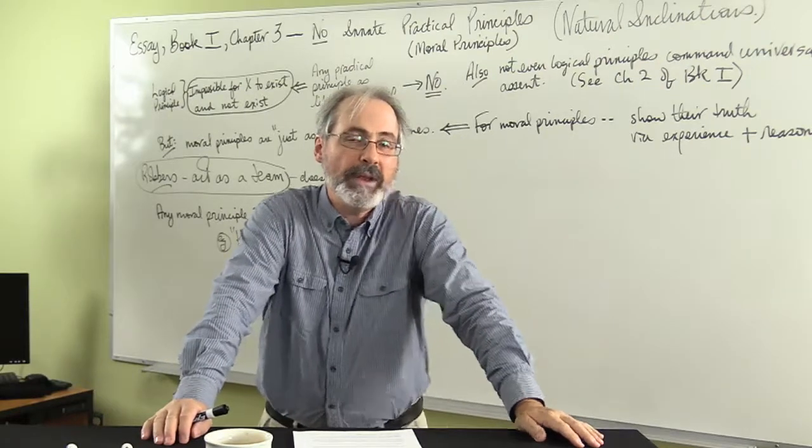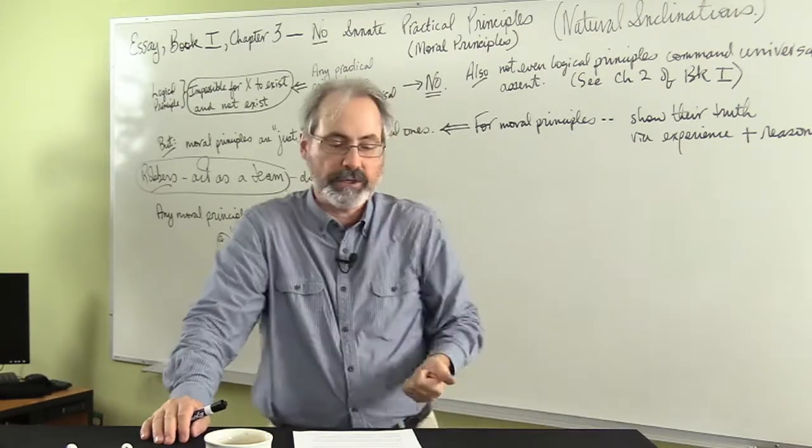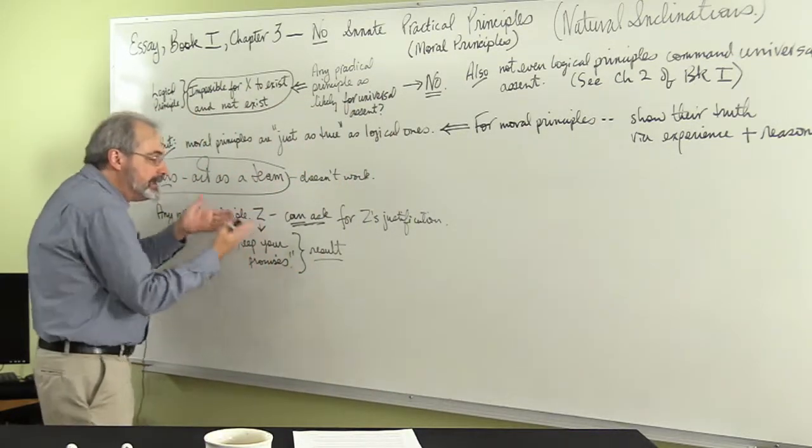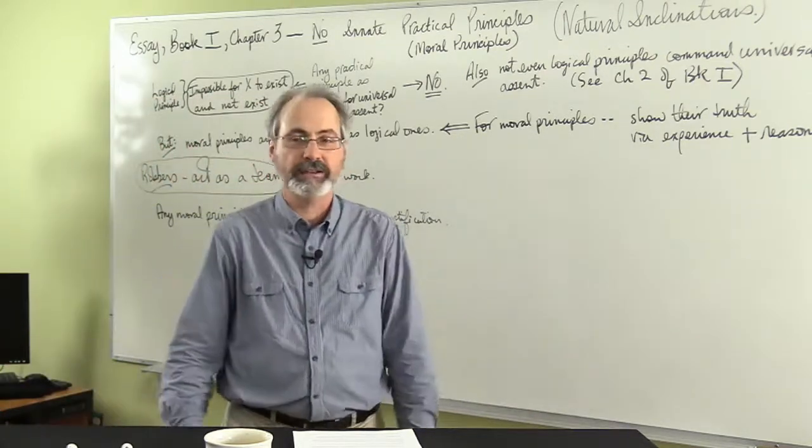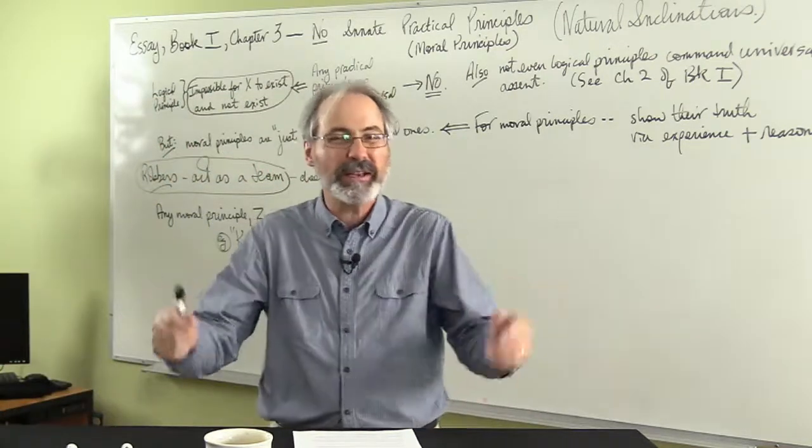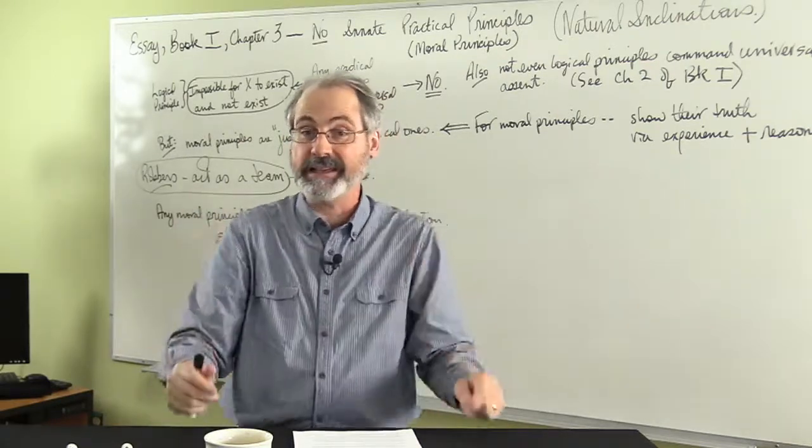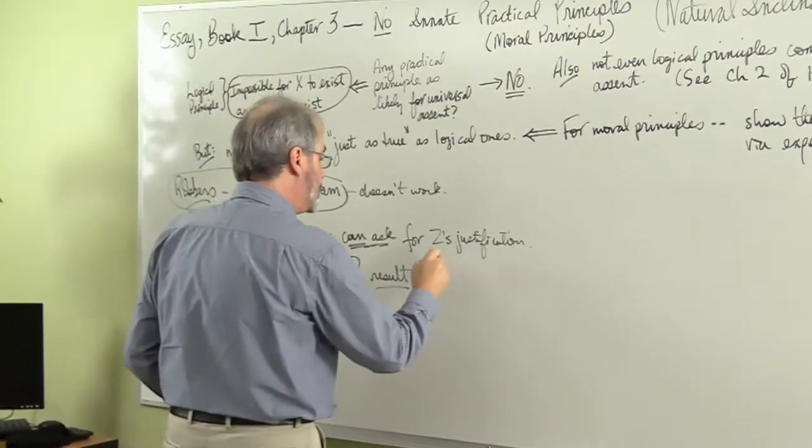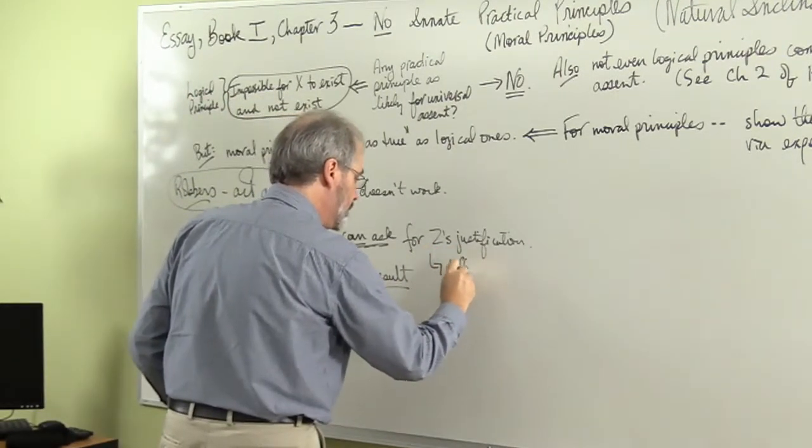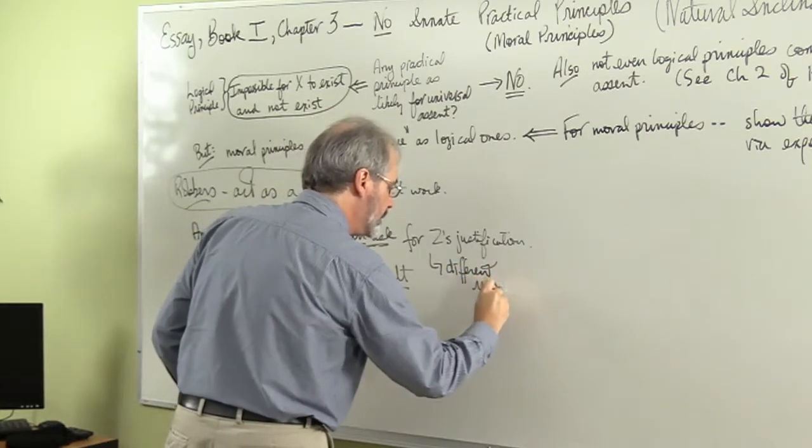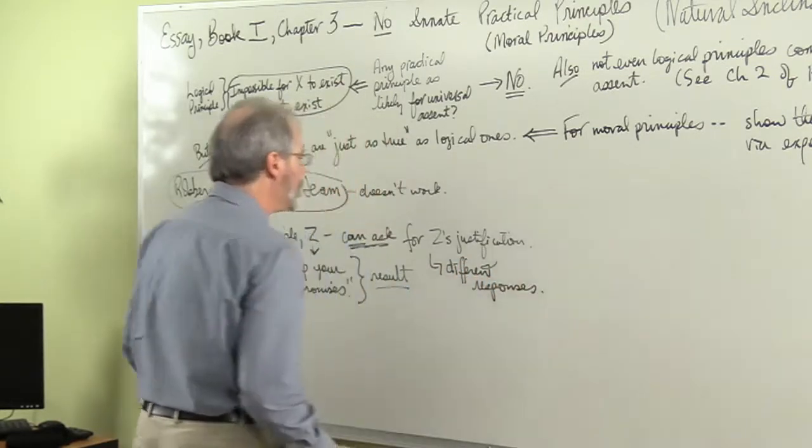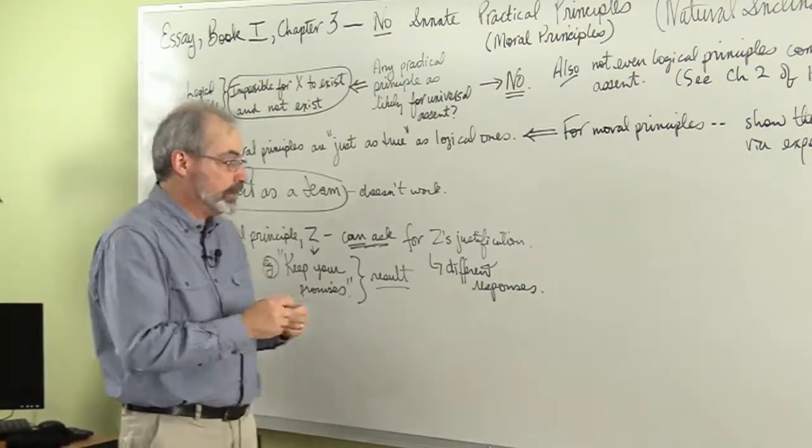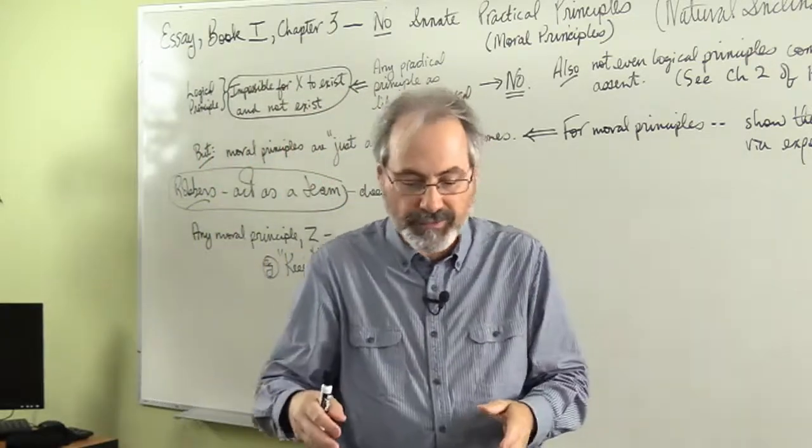And Locke says, well, given that we can always ask rationally for a justification, and given that we get different explanations that lead to this, Locke says, highly unlikely, seems pretty rich, seems pretty doubtful that keep your promises is innate. So, this isn't going to work either. So, because you can always ask for Zed's justification, and you get different responses, looks like this isn't going to work either. Moral principles, still, it seems that, well, they're the results, they're products.